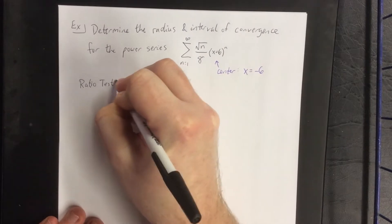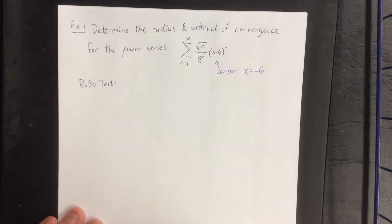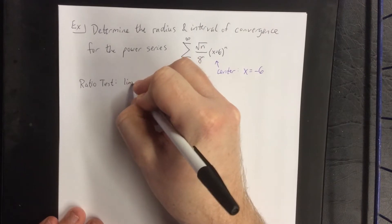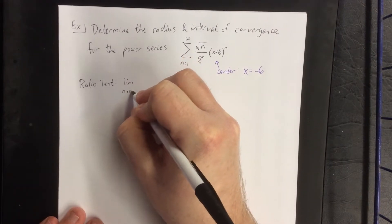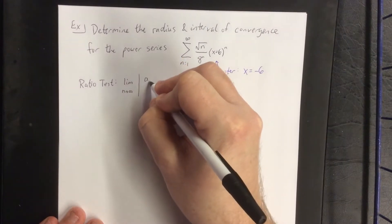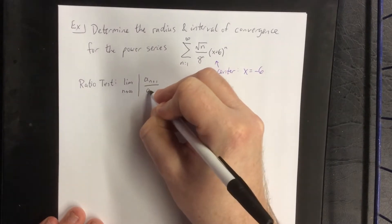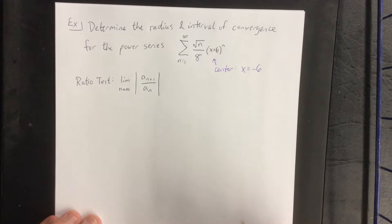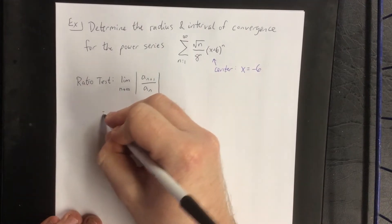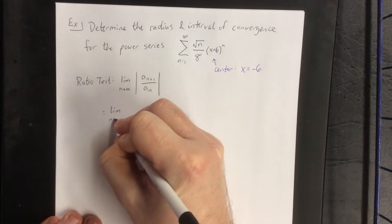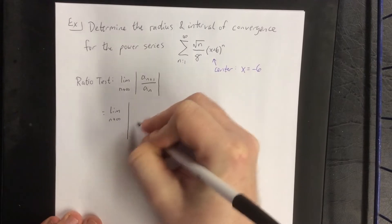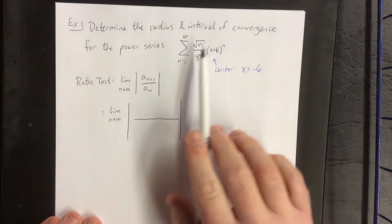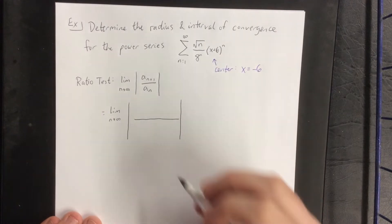In the event that everything is a power of n, go ahead and use the root test. We'll be setting up the limit as n approaches infinity of the absolute value of a sub n plus 1, the (n+1)th term, divided by the original term. This is going to be rather sizable, so we'll express this as a single fraction divided by a single fraction.